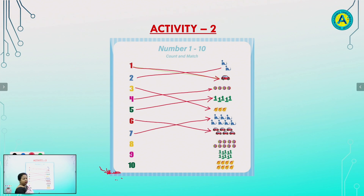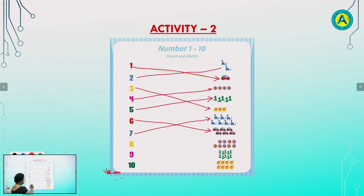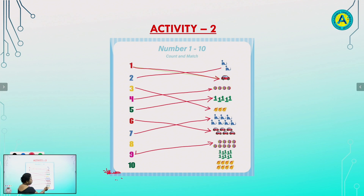Now, students, tell me, how many pictures are there? 1, 2, 3, 4, 5, 6, 7, 8, 9. Where is 9? Yes. Very good. Now, count the pictures. 1, 2, 3, 4, 5, 6, 7, 8, 9, 10. Here is 10. Yes. Here is 10.